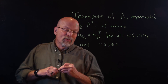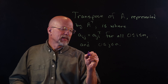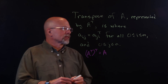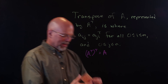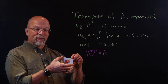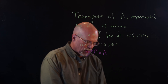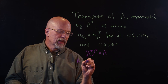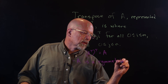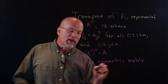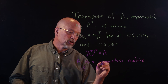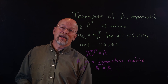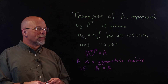We'll talk about one theorem right now: the transpose of the transpose is equal to the original matrix. That makes sense — if you take a card and flip it once and then flip it again, it's exactly the same card. Also, A is a symmetric matrix if the transpose of A is equal to A. If going across the diagonal gives you exactly the same matrix, then you know you have a symmetric matrix.